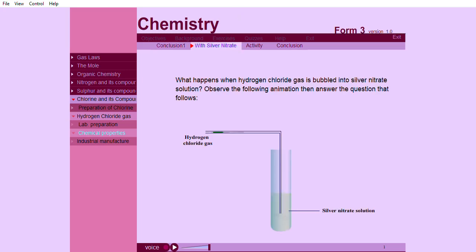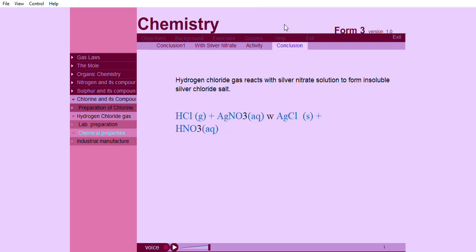What happens when hydrogen chloride gas is bubbled into silver nitrate solution? Hydrogen chloride gas reacts with silver nitrate solution to form insoluble silver chloride salt.